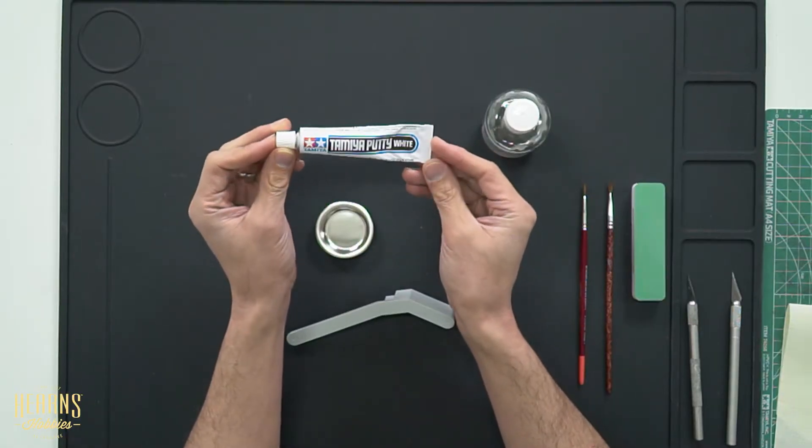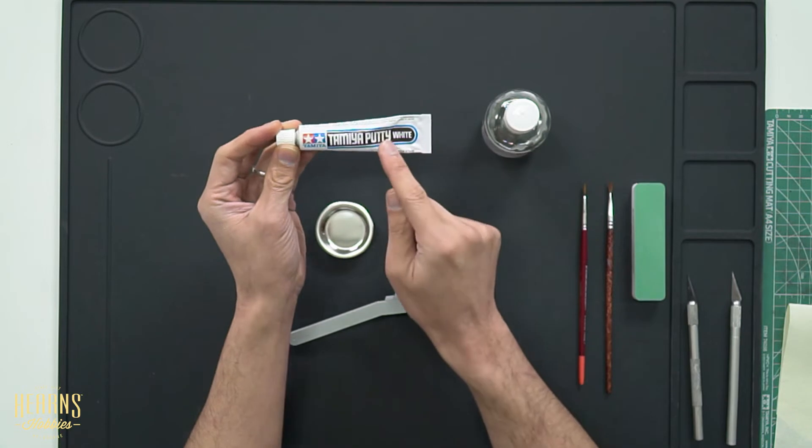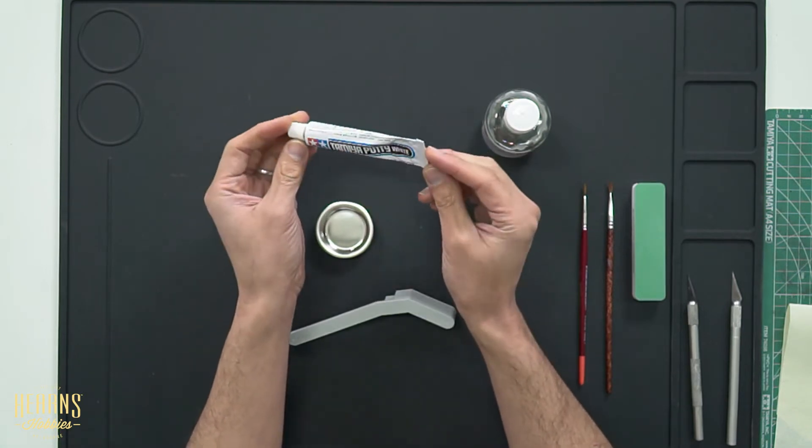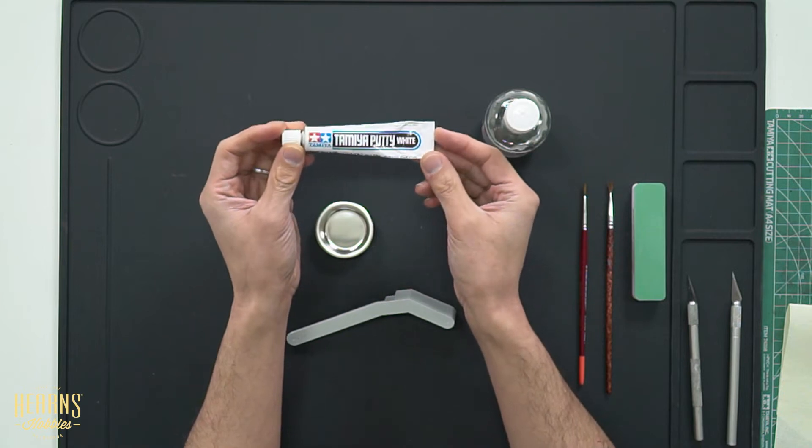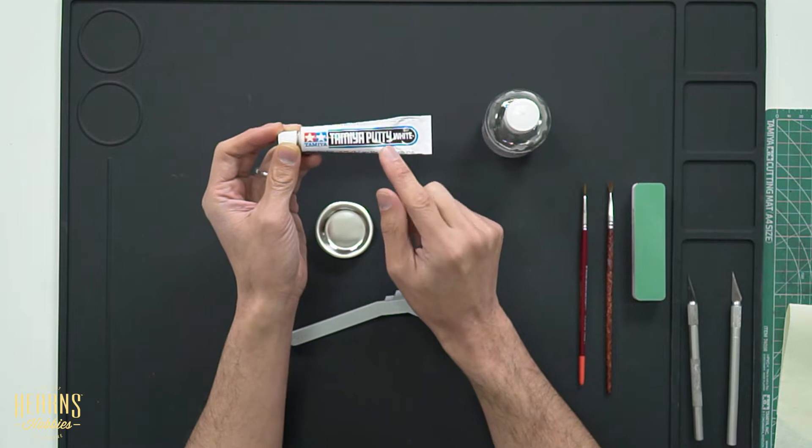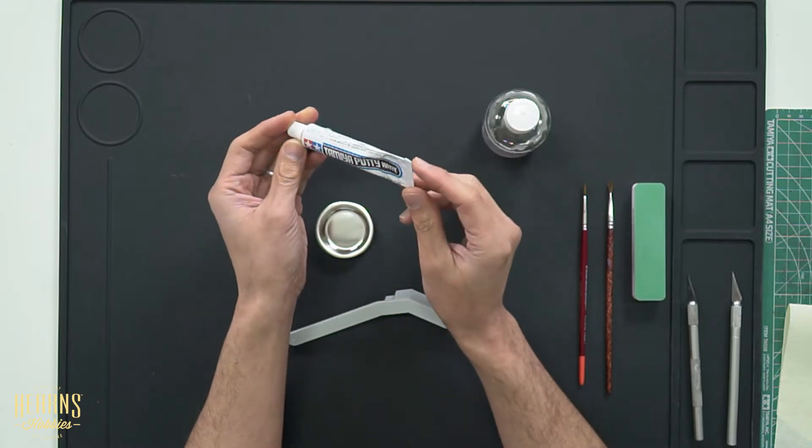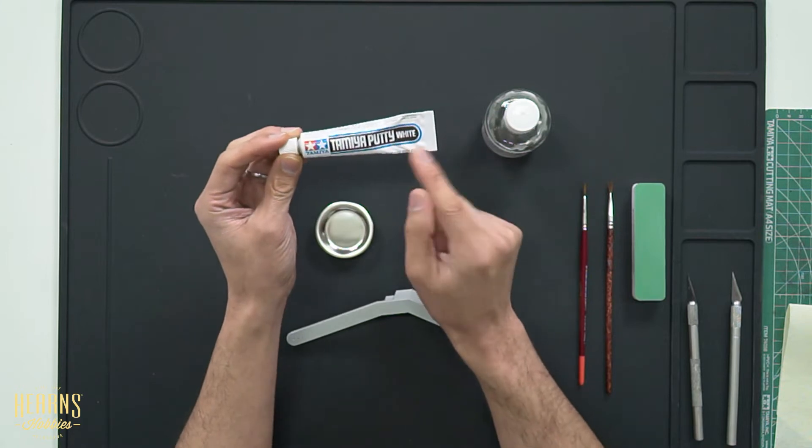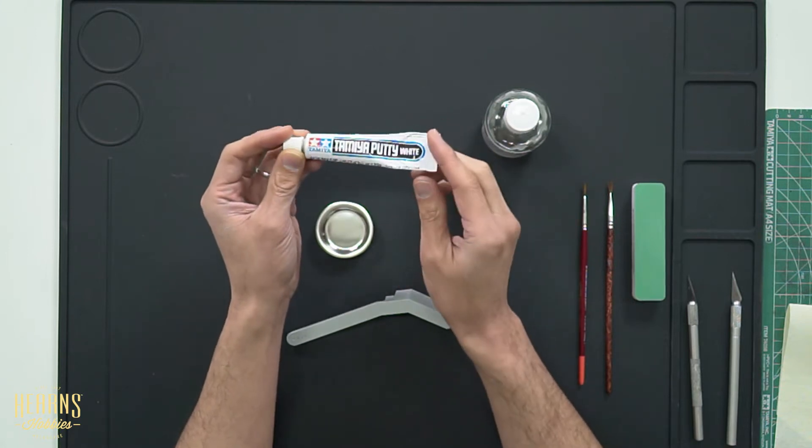So what I have here is the Tamiya white putty. Tamiya also makes a grey putty which is the original type. The difference is the consistency is a little bit different. The grey putty is a little bit coarser so it tends to have a bit more texture than the white one. The white one has finer particles in it.